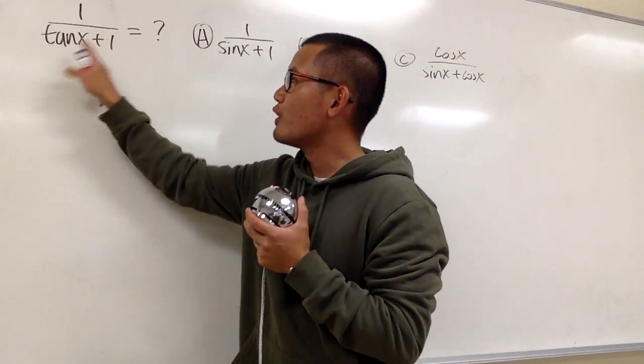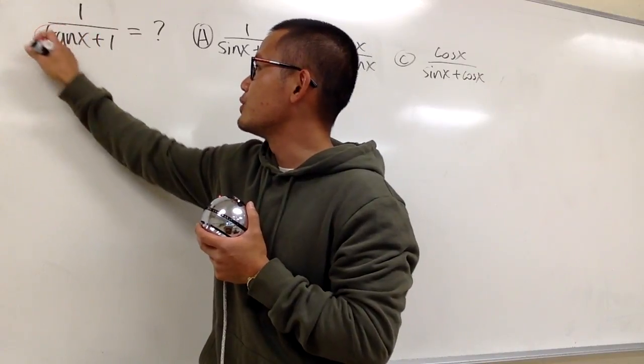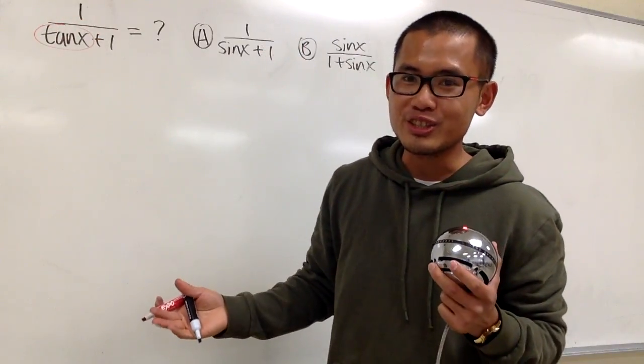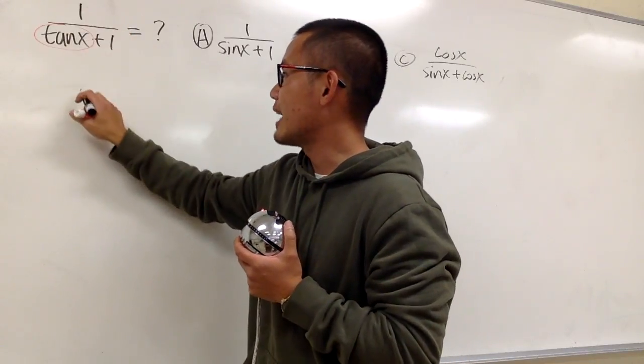Now we have 1 over tangent x plus 1. Because we have the tangent x, we can just go ahead and use the Google strategy. Let's rewrite tangent x as sine x over cosine x. So let's do that.